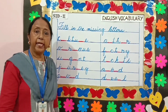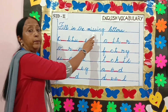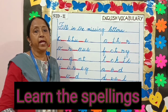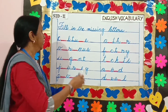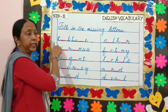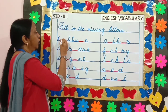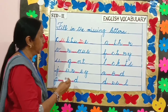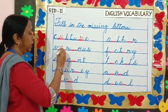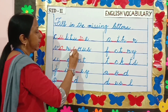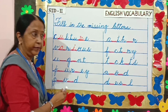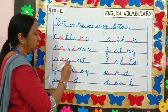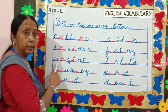Our next question is fill in the missing letters. Children, you have to learn the spellings by heart to do this question. First one is C-U-L-T-U-R-E — culture. V-A-R-I-O-U-S — various. U-R-G-E-N-T — urgent.